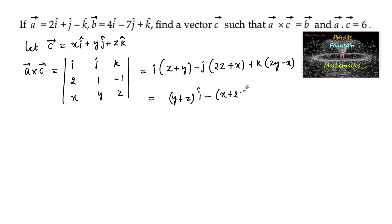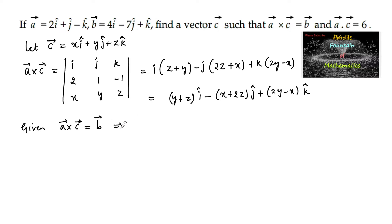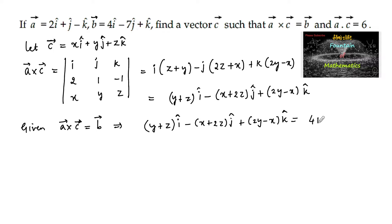Continuing the expansion: plus k times of (2y minus x). So that is (y plus z) i cap minus (x plus 2z) j cap plus (2y minus x) k cap, and it is given that a cross c is equal to vector b, which is 4i minus 7j plus k.